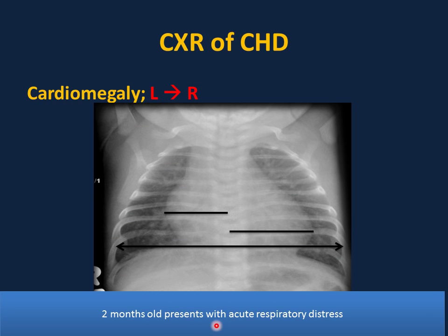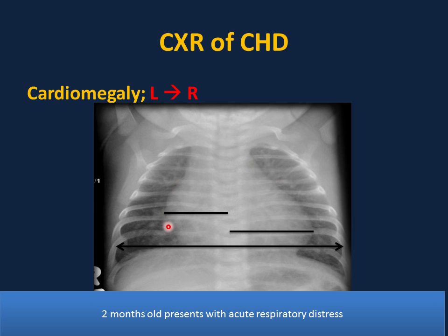In this case, a two-month-old presents with acute respiratory distress. On x-ray, the cardiothoracic ratio is more than 55%, confirming cardiomegaly. The pulmonary vascular markings are prominent bilaterally, indicating increased blood flow. For a two-month-old with acute respiratory distress, diffuse cardiomegaly with prominent pulmonary vessels bilaterally is indicative of a congenital heart defect with left-to-right shunt. The differential diagnosis is VSD, ASD, or PDA.